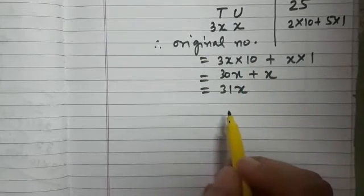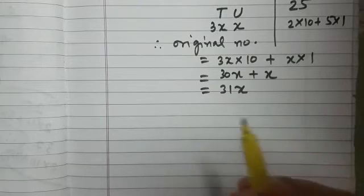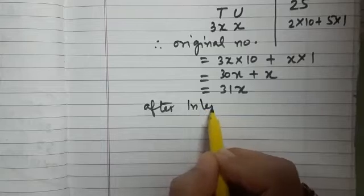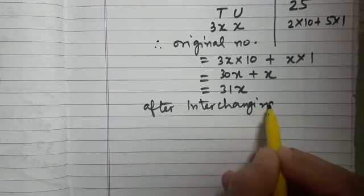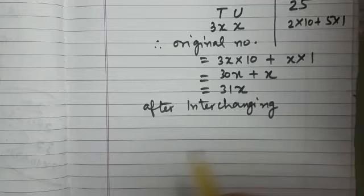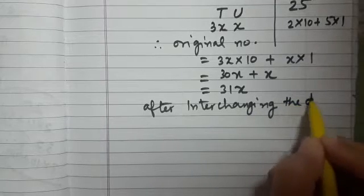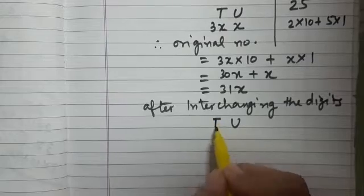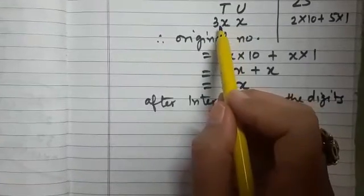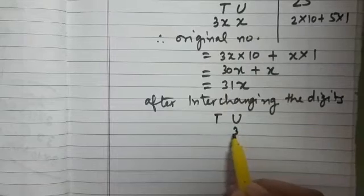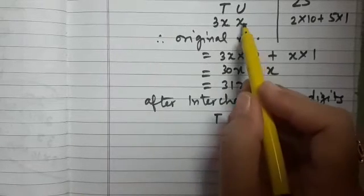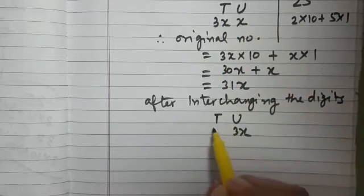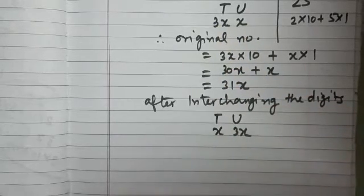Now in this question it is given when we interchange the places. After interchanging or we say reversing, after interchanging the digits, now what will happen? The digit which was at the tens place will come to the units place, and the digit which was at the units place will come to the tens place. So this is how we interchange the digits.